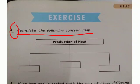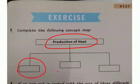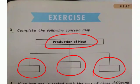آپ کے سامنے question ہے جس کی heading ہے production of heat — آپ نے 3 ways of production of heat جو پڑھے ہیں وہ 3 boxes میں لکھنے ہیں۔ وہ تین طریقے ہیں: rubbing, burning, and electricity — یہ 3 ways آپ نے box میں write کرنے ہیں۔ This is your homework — آپ نے خود لکھنا ہے اور learn بھی کرنا ہے۔